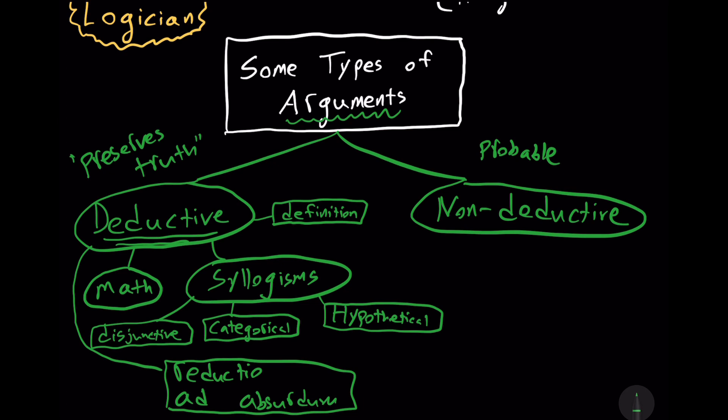So that's deduction, just a rough outline. But what about non-deductive arguments? Non-deductive arguments are much more murkier. You don't have this definitive, guaranteed result in non-deductive arguments. Some arguments are stronger than other arguments when it comes to non-deduction. And there are different ways to classify it.